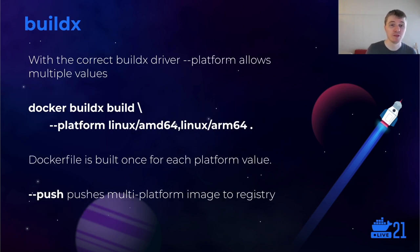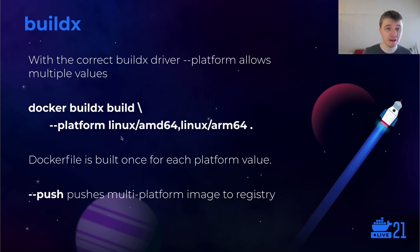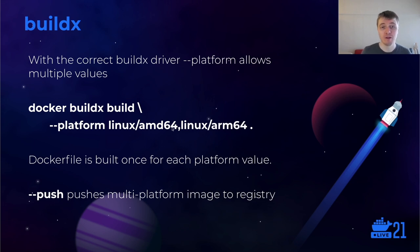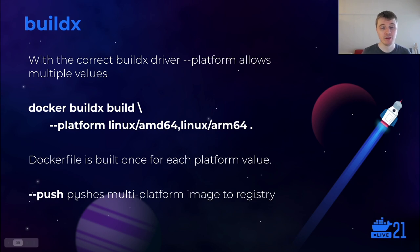Once you've done that, you can run the same format as before, but now when specifying the platform you're building for, you can specify multiple platforms separated by a comma. The Dockerfile is then built multiple times for each platform. You can use --push, for example, to push this multi-platform image directly to the registry.